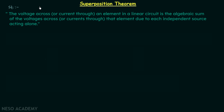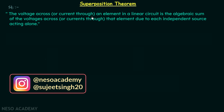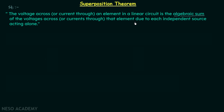Superposition theorem states that the voltage across or the current through an element in a linear circuit is the algebraic sum of the voltages across or the currents through that element due to each independent source acting alone. In a linear bidirectional network containing more than one independent source, the response in any element is the sum of responses obtained with one source acting at a time and the other sources being turned off.